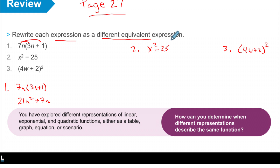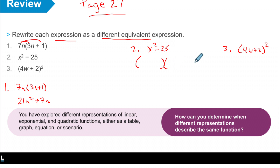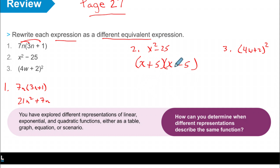The first one's easy — that's review from the first week of school and from last year. Number two: did you notice this was x squared minus 25? That's called a difference of perfect squares. This is a quadratic and we can factor it into two different expressions. The square root of x squared gives x, and the square root of 25 gives 5 and negative 5. So number 2 is rewritten as the factored expression (x + 5)(x − 5).